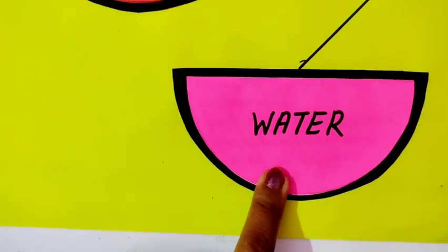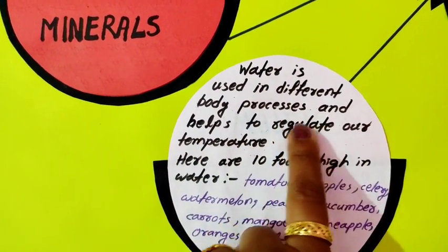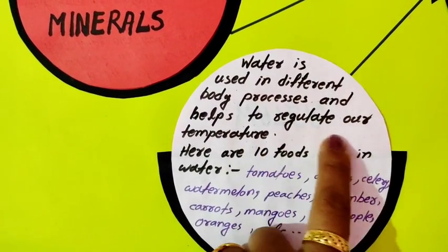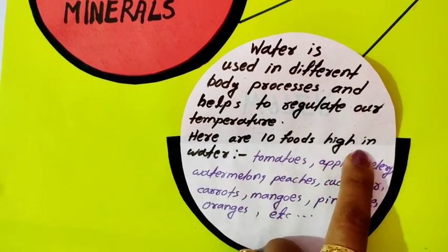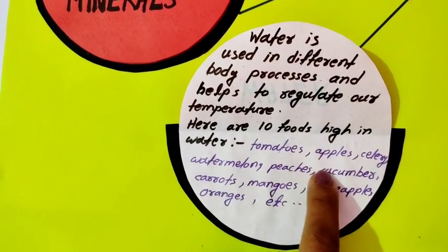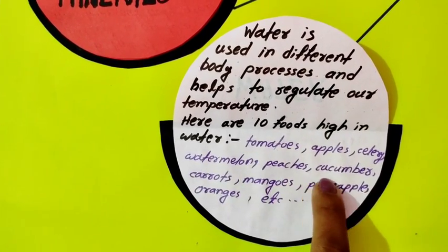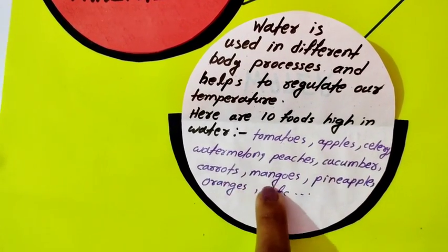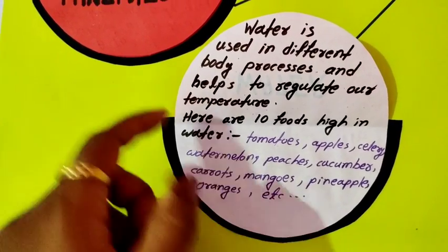Then water. Water is used in different body processes and helps to regulate our temperature. Here are 10 foods high in water: tomatoes, apples, celery, watermelon, peaches, cucumber, carrots, mangoes, pineapples, oranges, etc.